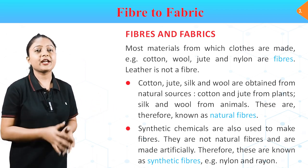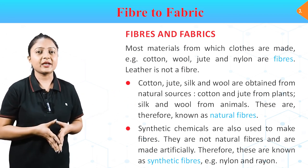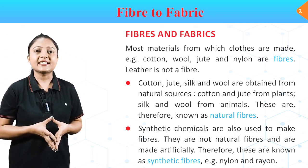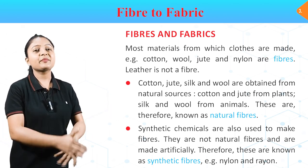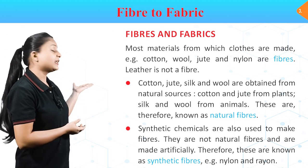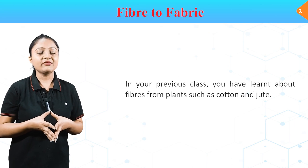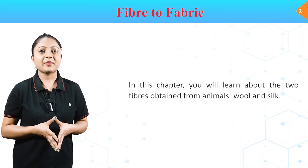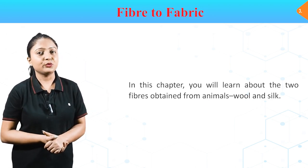Cotton, jute, silk and wool are obtained from natural sources — cotton and jute from plants, silk and wool from animals. These are therefore known as natural fibers. Synthetic chemicals are also used to make fibers; they are not natural and are made artificially, therefore known as synthetic fibers — example nylon and rayon. In your previous class you learnt about fibers from plants. In this chapter you will learn about the two fibers obtained from animals: wool and silk.